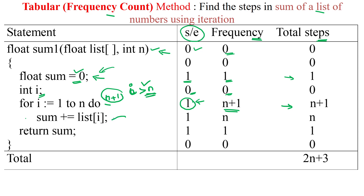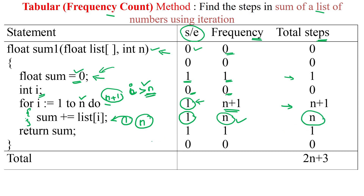The sum statement inside the for loop executes one time per iteration. Since the loop runs n times, this statement executes n times. So one unit of time is consumed for each iteration, and the statements inside the for loop execute n times in total, giving n units of time — a total step count of n.